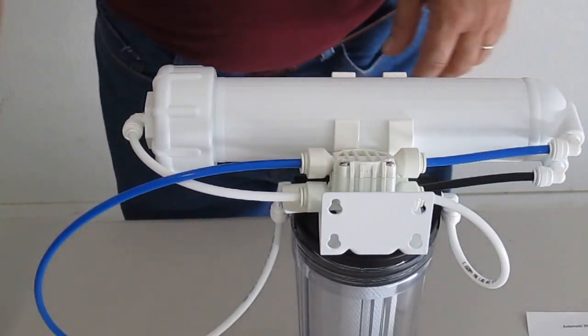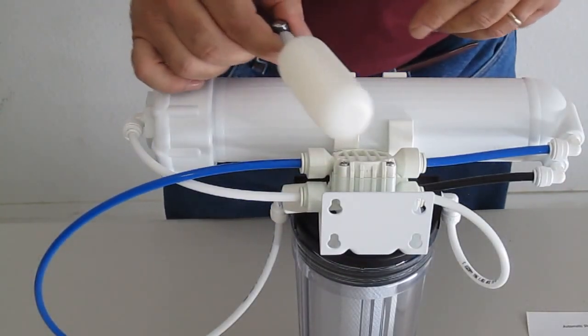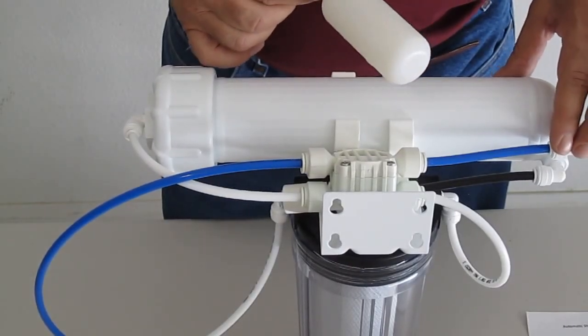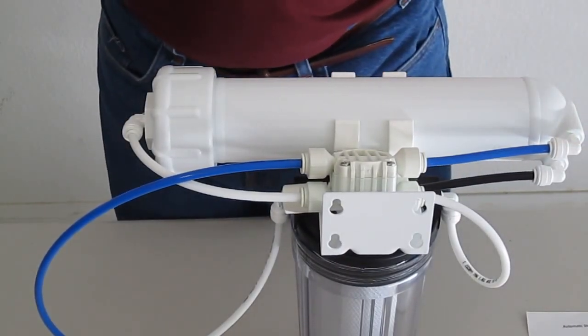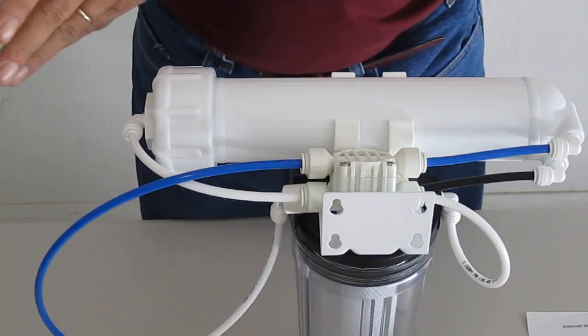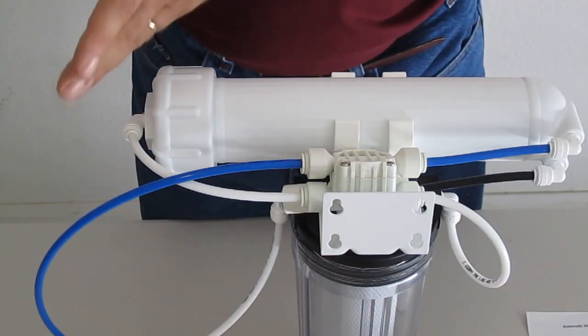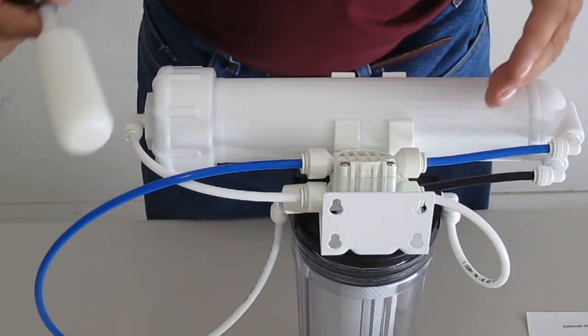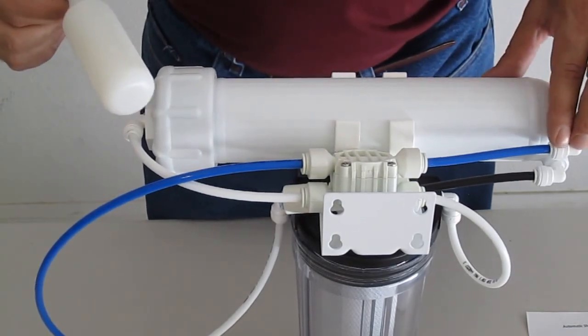If you are using, let's say, a float valve and a reservoir, there's really no need to put this check valve or backflow prevention valve in because there's no way that water is going to go from that reservoir tank unless it's pressurized, like under your sink, then you would want it. But if it's just going into a reservoir for hydroponic use, you really don't need this valve.